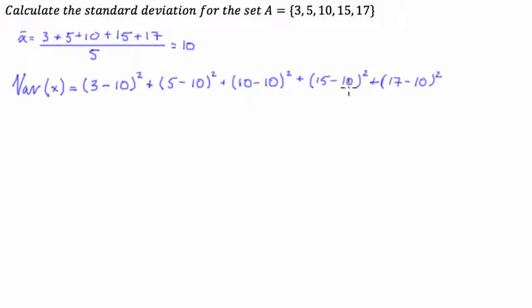Now, because this is the average squared deviation, we then have to divide it by the number of items in our set. So divide it by 5.